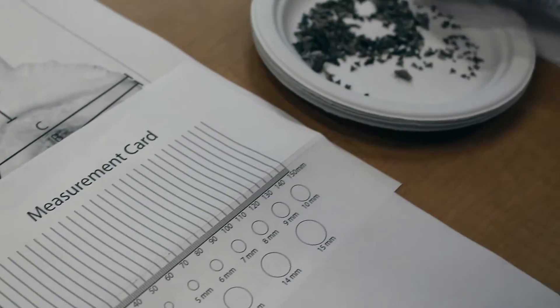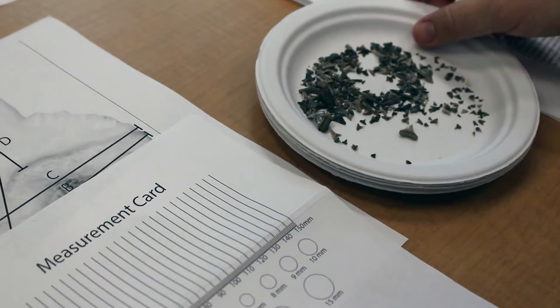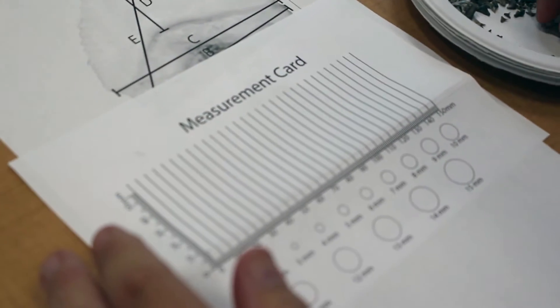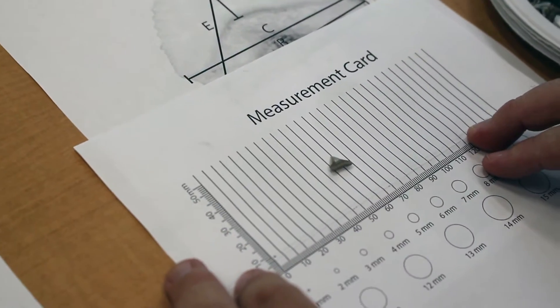So for this video we're going to talk about how to measure the fossilized shark teeth using the measurement card. And for this video we're going to go ahead and use this, which is a carchariniform, probably a lower from something like a dusky shark.